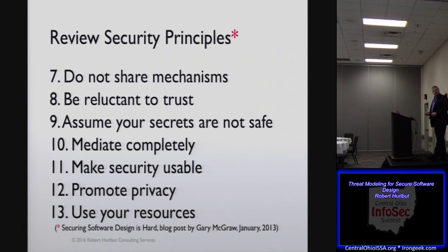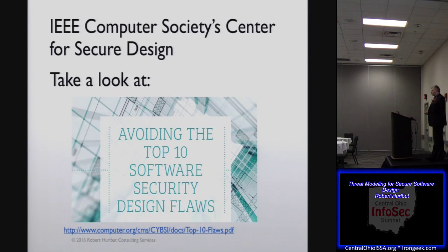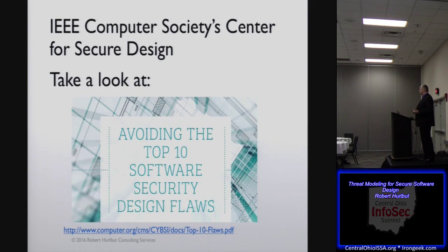Another great resource from the last couple years is one that came out from the IEEE Center for Secure Design — 'Avoiding the Top 10 Software Security Design Flaws.' A bunch of companies got together and put this together, and their approach was not just to focus on the vulnerabilities but on the flaw that causes the vulnerabilities. So this is another great short book you can hand out to your team to understand some of the basic security principles before you get started.